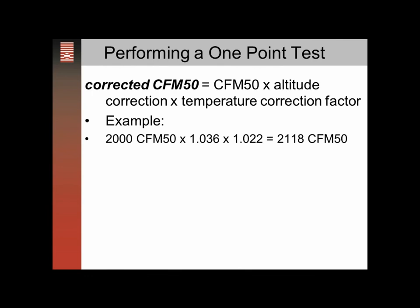The corrected CFM equals the CFM times the altitude correction factor times the temperature correction factor. In this combined example, starting with 2,000 CFM and applying both correction factors, we end up at 2118 CFM at 50.